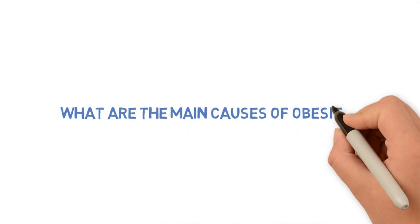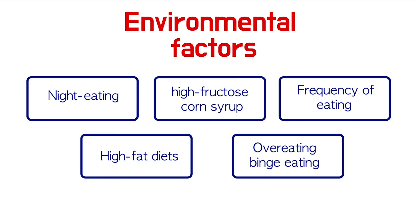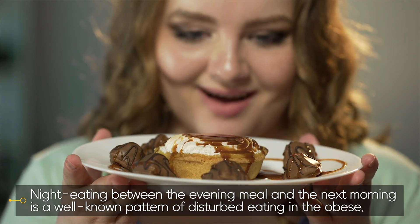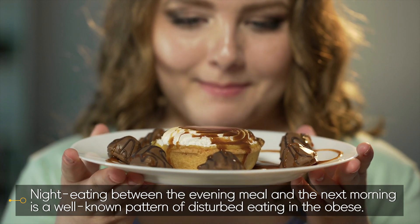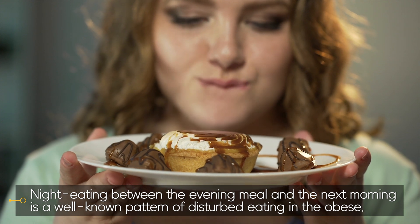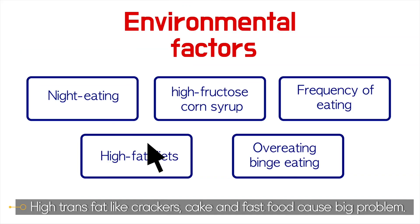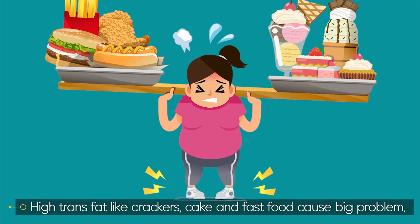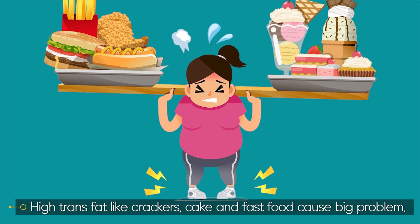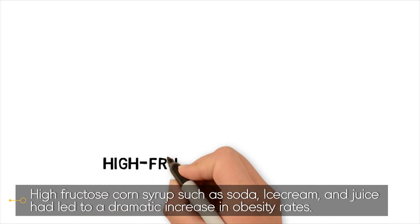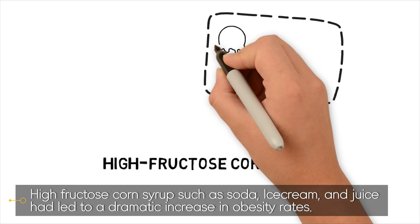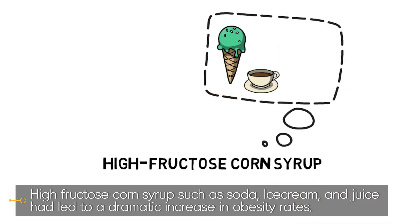What are the main causes of obesity? Night eating between the evening meal and the next morning is a well-known pattern of disturbed eating in the obese. High trans fats like crackers, cake, and fast food cause big problems. High fructose corn syrup, such as in soda, ice cream, and juice, has led to a dramatic increase in obesity rates.